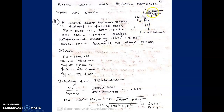In a corner column, this beam will have a load P in the x-direction and this beam will have a load P in the y-direction. Both loads are at a certain eccentricity from the CG of the column. This will generate a moment in x and a moment in y.